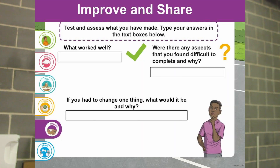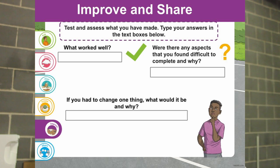Now it's time for the last step: thinking about how we could improve our design. What could we do to make it better? What type of things about the design worked well? What did you like about it? What type of things could have been better? What kind of things did you find difficult? Or maybe you could have chosen a different way of doing it? If you had to change anything about your design, what would you choose? Make sure to answer these questions in the slides.